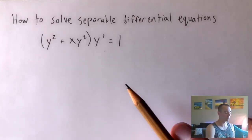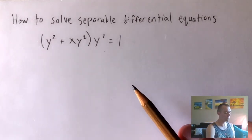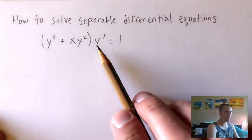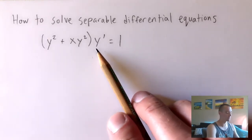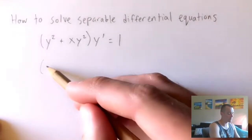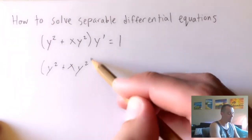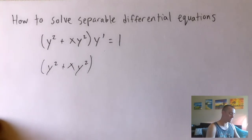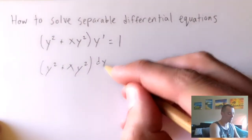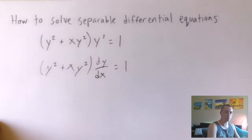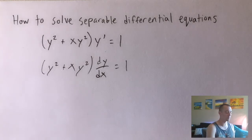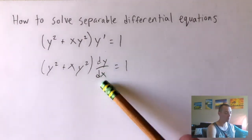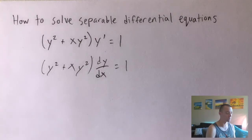So the first step if you have a problem like this one: the first thing we want to do is change y prime into a form that's a little bit easier to work with. All we really need to do to start out — everything else is going to remain the same — is rewrite y prime as dy/dx. This is just two different notations that mean the exact same thing. dy/dx is the same as y prime, but we want it in that form so we can separate our dy on one side with the y's and our dx on the other side with the x's.